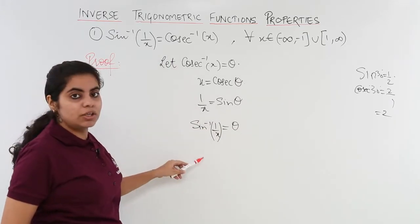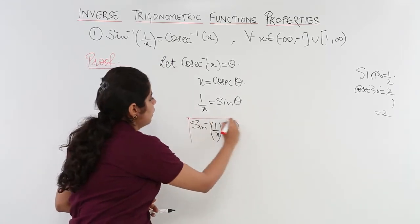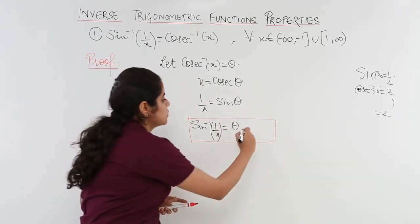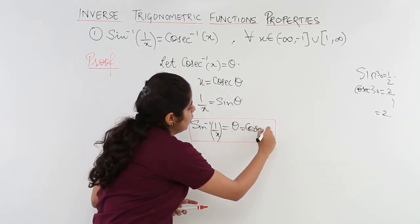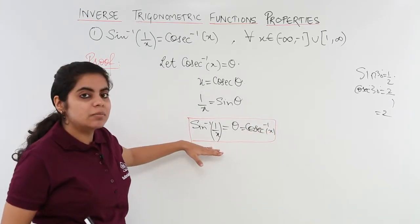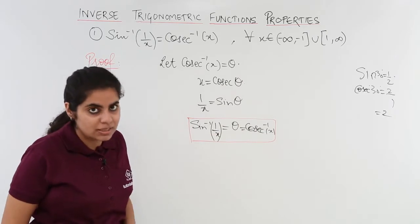That is what we wanted to prove. What was theta? Theta was taken as cosecant inverse x. So I replace the value again cosecant inverse x. That means sin inverse 1 by x is equal to cosecant inverse x. First thing.